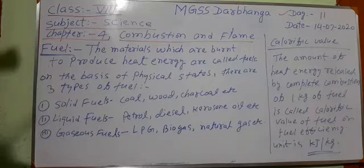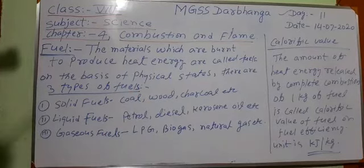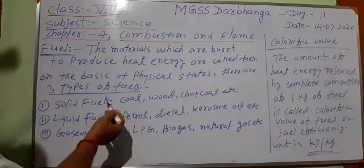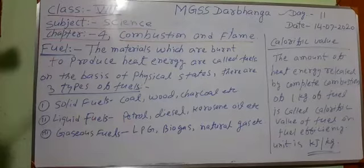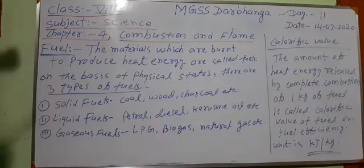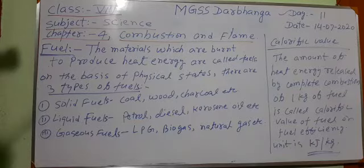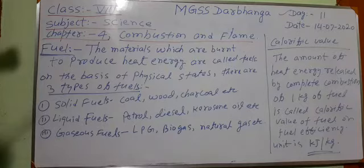On the basis of physical state, all these fuels can be divided into three groups. There are three types of fuels. First are solid fuels — fuels whose physical state is solid. Examples of solid fuels are coal, wood, charcoal, cotton, and many more. Second is liquid fuel — petrol, diesel, kerosene oil are examples of liquid fuels. Third is gaseous fuels — LPG, biogas, natural gas, and coal gas are examples of gaseous fuel.